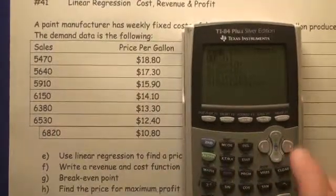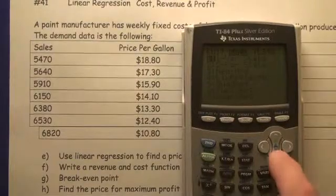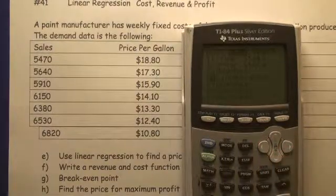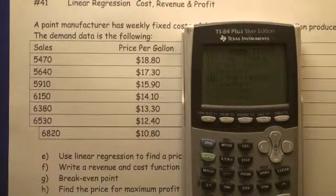So press STAT. Then you're going to go over to calculate linear regression. So you actually scroll to the right. Go down to linear regression, AX plus BY. That's your slope intercept. Press ENTER.